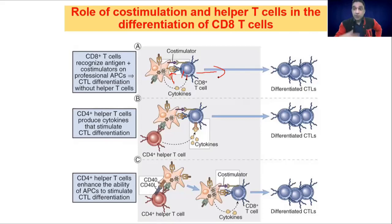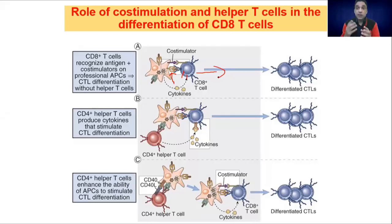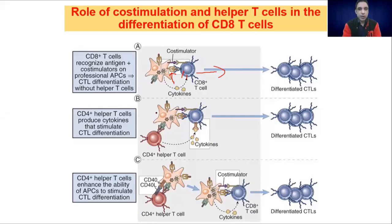To refresh our memory: cytotoxic T cells are the cells designed to kill infected cells — cells containing a virus or cells hijacked by the virus. CTLs carry the license to kill particular cells; they carry the potential and ability to kill infected human cells. There are other things which can support the activation and differentiation of CD8 cells.